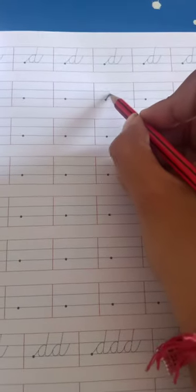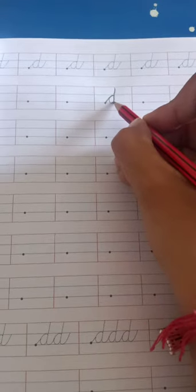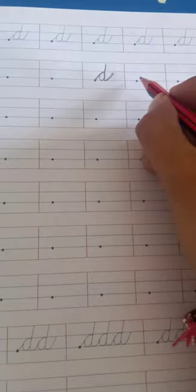Now page number 17. Page number 17 भी dots वाले तो कर लेंगे. आप without dots वाले करने हैं आपको. See. Dot से आप slanting line draw करेंगे. Then circle बना के उस उपर तक ले जा के और tail को second line से match करेंगे. D as dog.